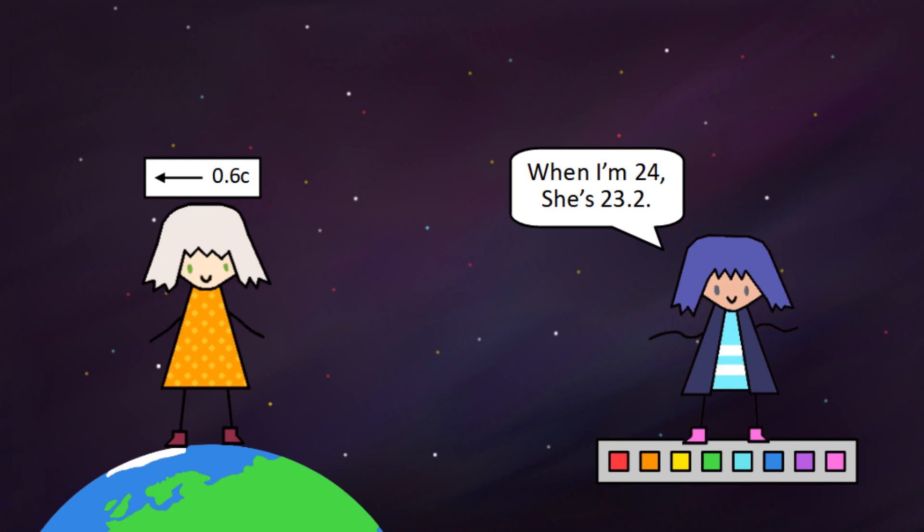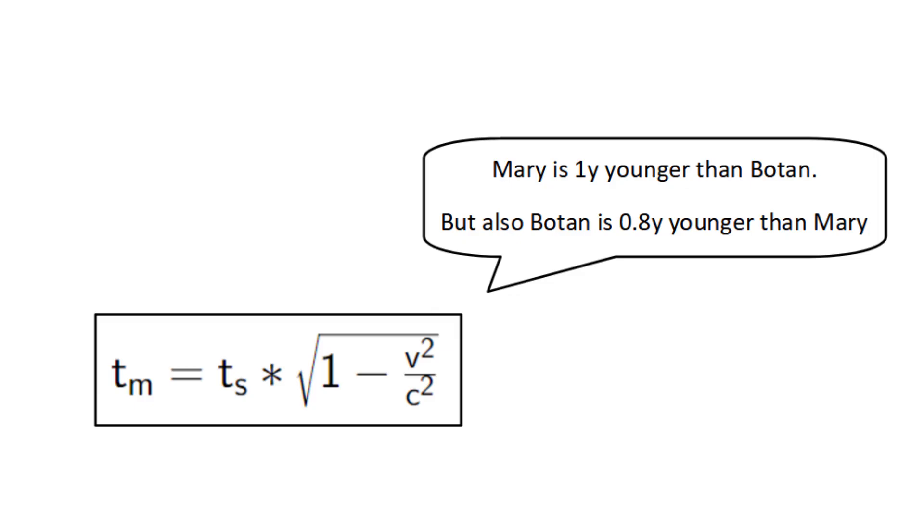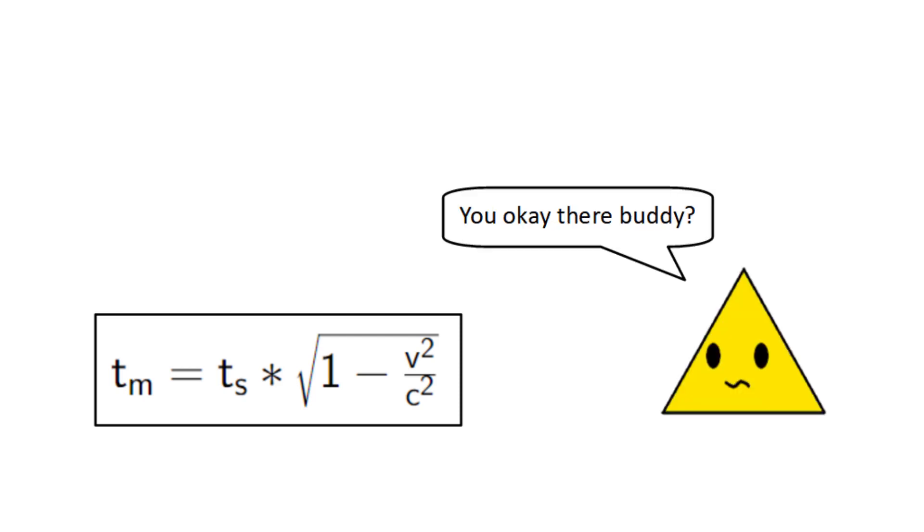So the time dilation formula is trying to tell us that Mary is younger than Botan, but also that Botan is younger than Mary. So clearly this formula can't be true, because it leads to a contradiction, right? Well, as it turns out, this is actually not a contradiction at all,